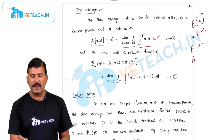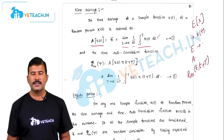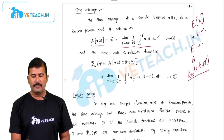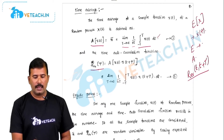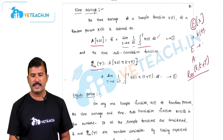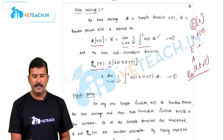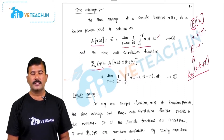Similar to the time average, the time autocorrelation function: R_xx of t comma t plus tau is the statistical autocorrelation function. For a sample function x of t we can define the time autocorrelation function R_xx of tau, which is the time average of x of t into x of t plus tau. In place of statistical average, that is expectation, here we use the time average A of x of t into x of t plus tau, which is limit t tends to infinity, 1 by 2t, integral from minus t to t of x of t into x of t plus tau.